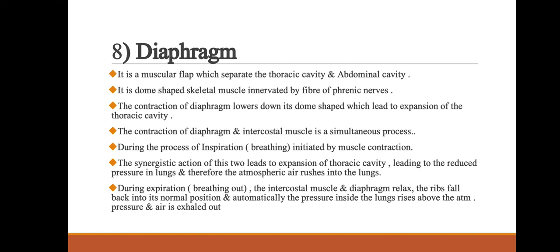Next, we discuss the diaphragm. The diaphragm is a muscular flap that separates the thoracic cavity and abdominal cavity. It is a dome-shaped skeletal muscle innervated by fibers of the phrenic nerves. Contraction of the diaphragm lowers its dome shape, leading to expansion of the thoracic cavity. The synergistic action of the diaphragm and intercostal muscles during inspiration initiates muscular contraction, expanding the thoracic cavity and reducing pressure in the lungs, so atmospheric air rushes into the lungs.